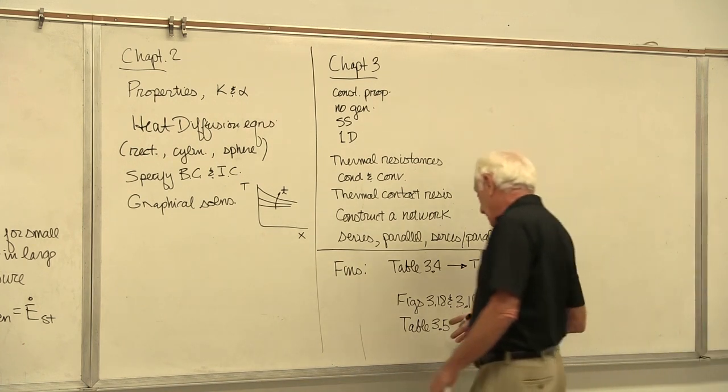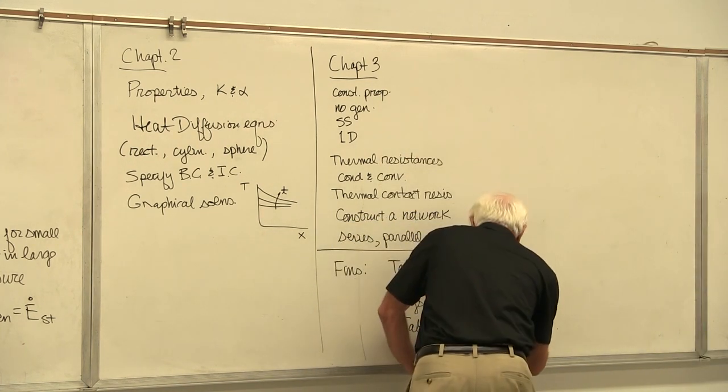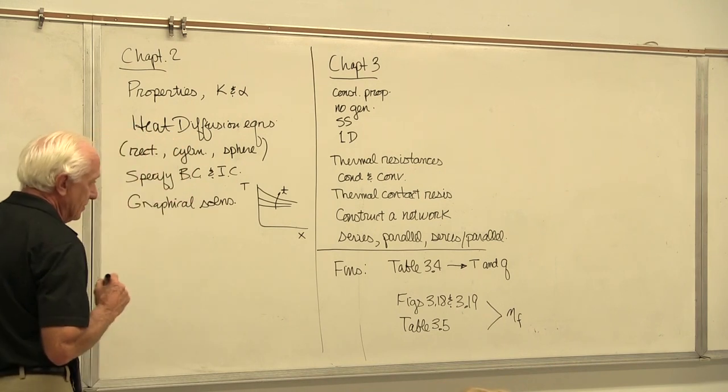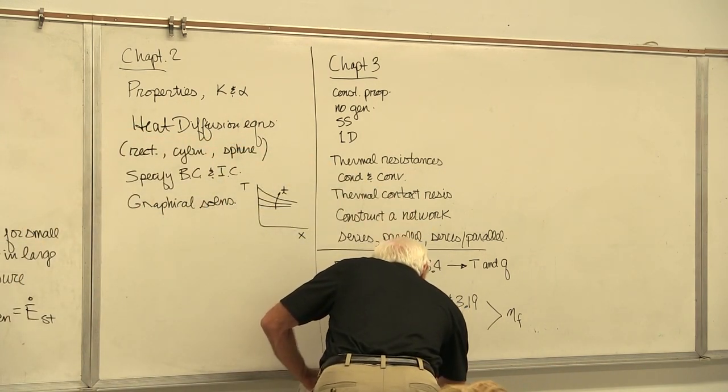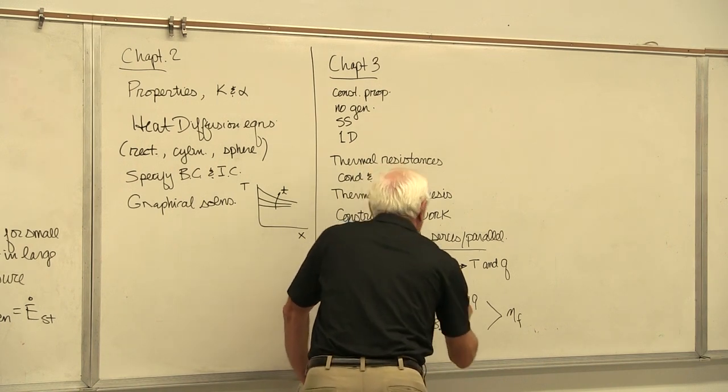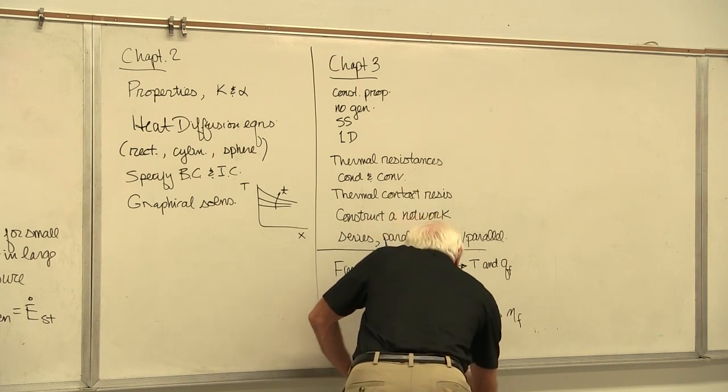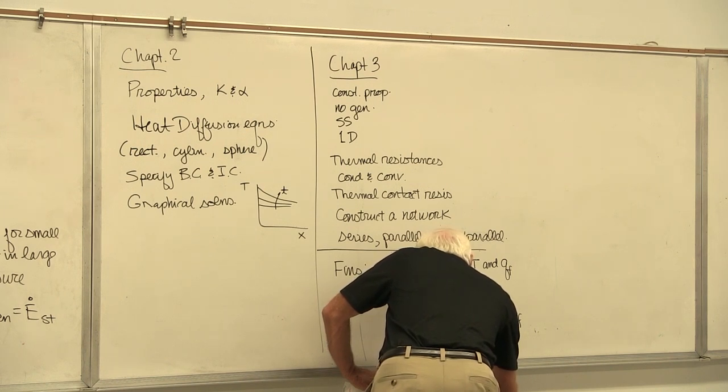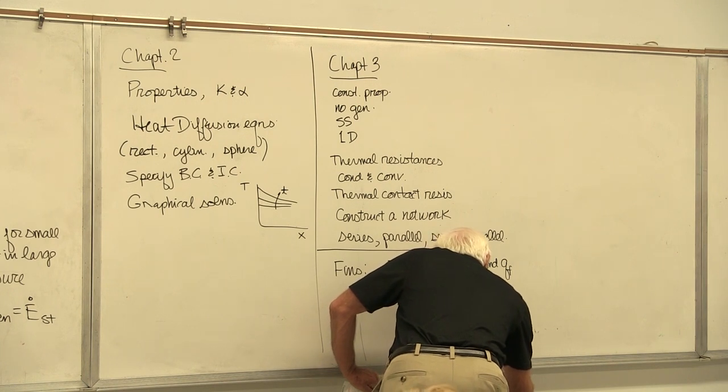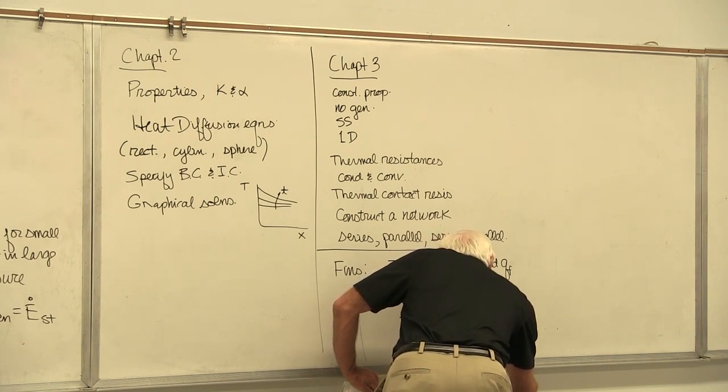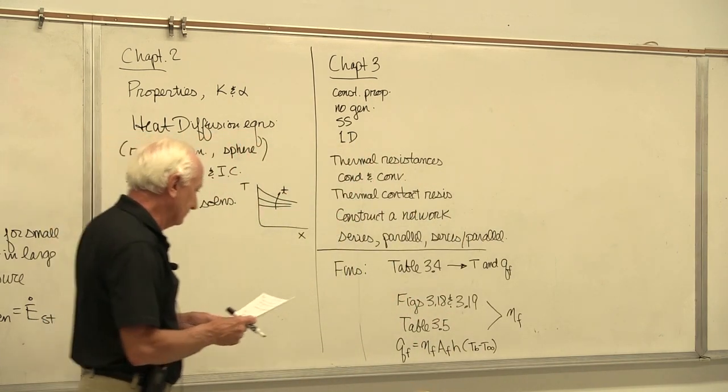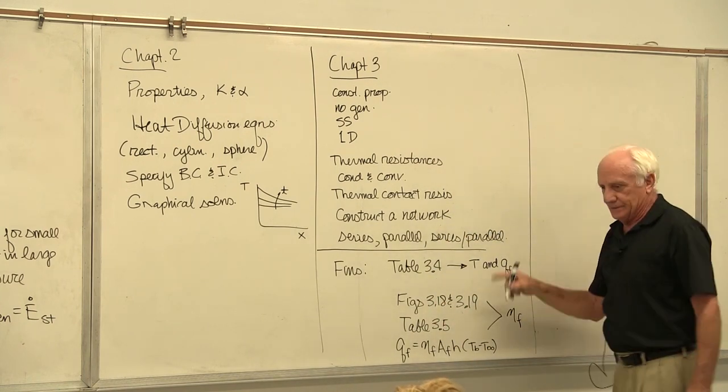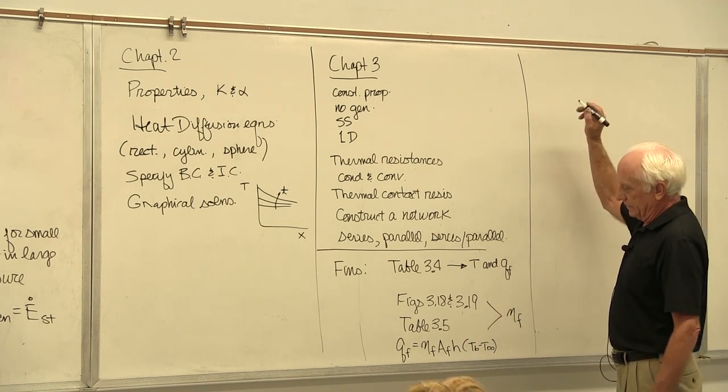If you want to use Figure 3-18 and 3-19 or Table 3-5, then these guys will give you the fin efficiency—not Q, the fin efficiency. If you want Q, then put efficiency in this equation: Q fin is equal to the fin efficiency times H times the area of the fin times T base minus T infinity. That's how you get Q fin.